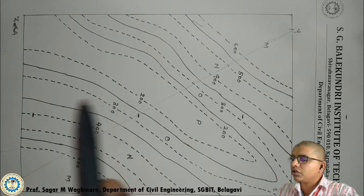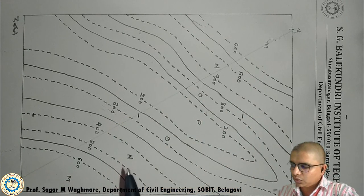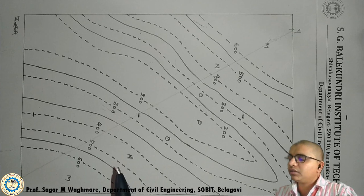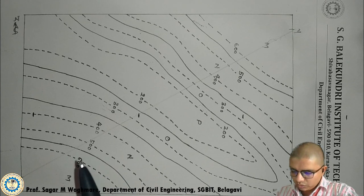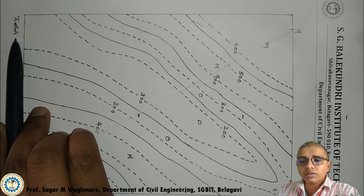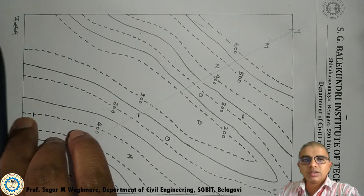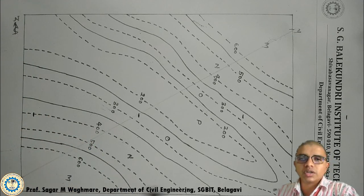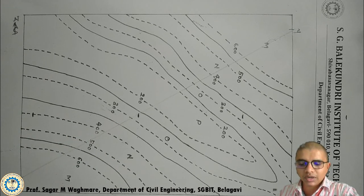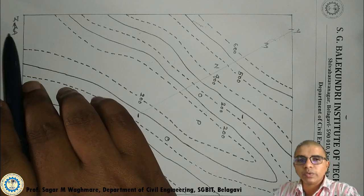This is the geological map which is being given. First, understand how to hold this map — the important part is holding a map correctly. When you hold a map, the north direction should always be away from you. That is the most important task of holding a geological map. The scale can be towards you, but the north direction should always be away from you.